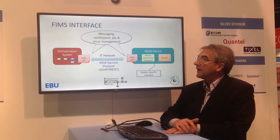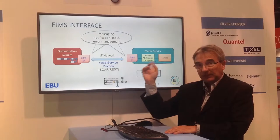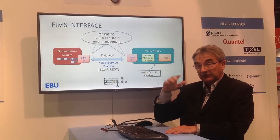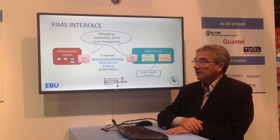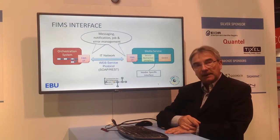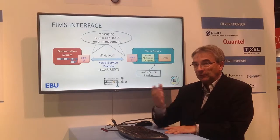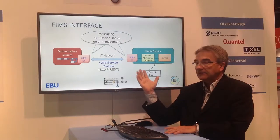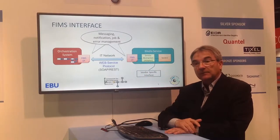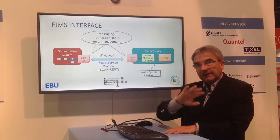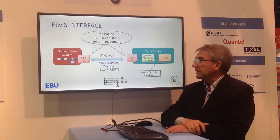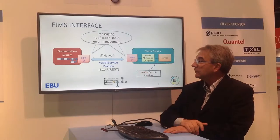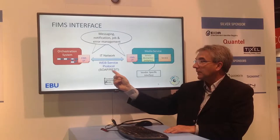What does it mean to define a FIMS interface? It's about defining the operations between devices, either as a client or as an application. We define the different messages and notifications — this is particularly essential to FIMS because we are dealing with media. Media takes time: transferring content takes time, transcoding video takes time. So we deal with notifications that tell the service when something is completed — for example, content has been transferred from point A to point B or transcoded — and this is defined through the FIMS interface, in SOAP and REST.